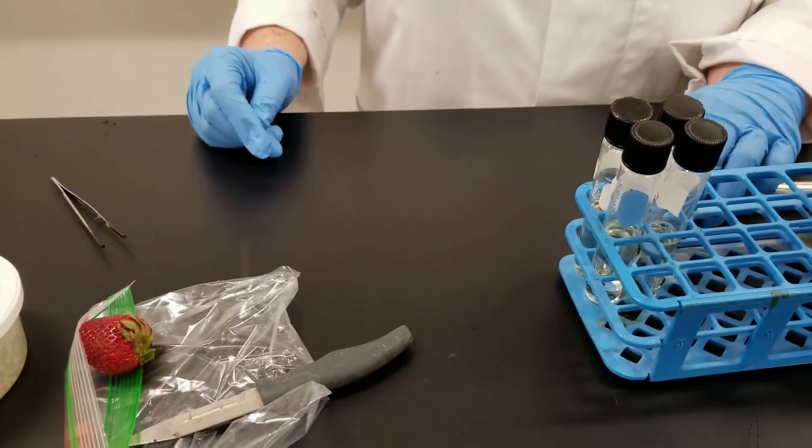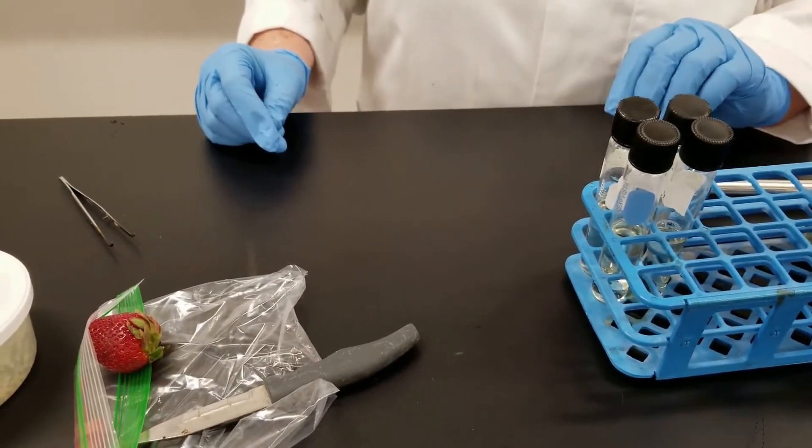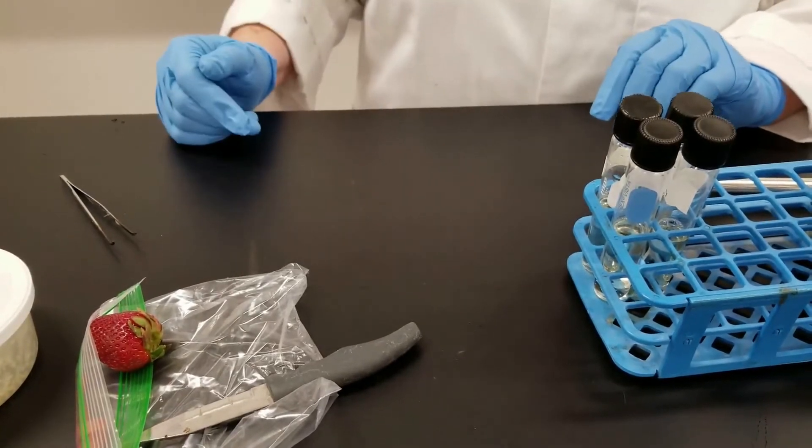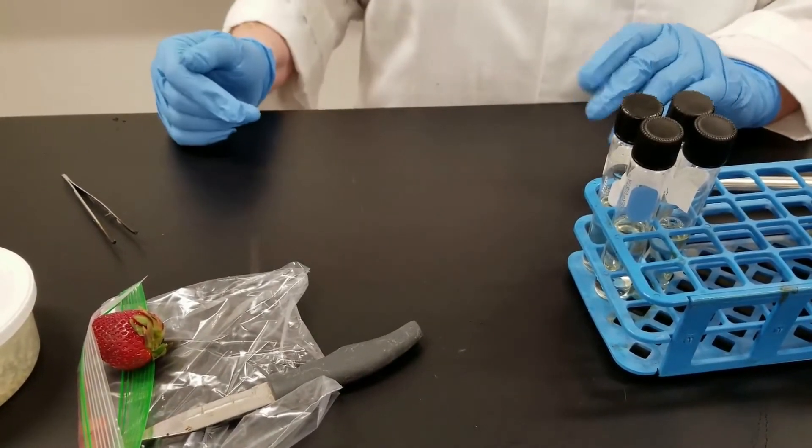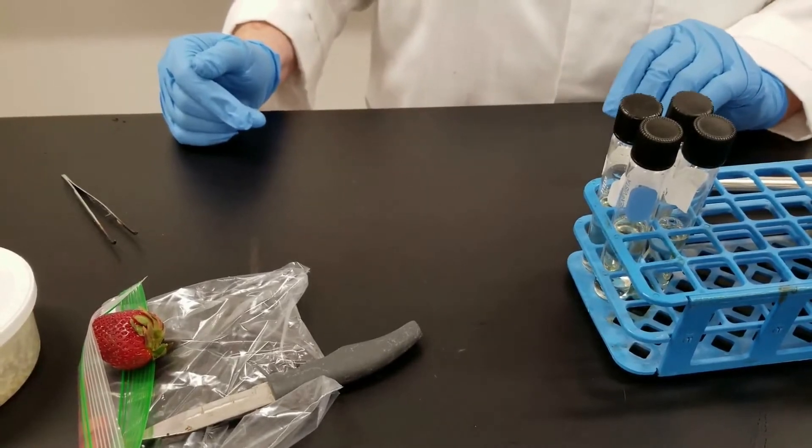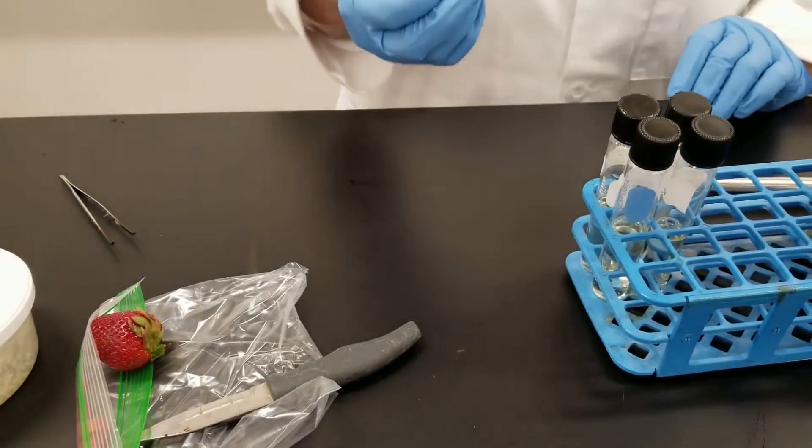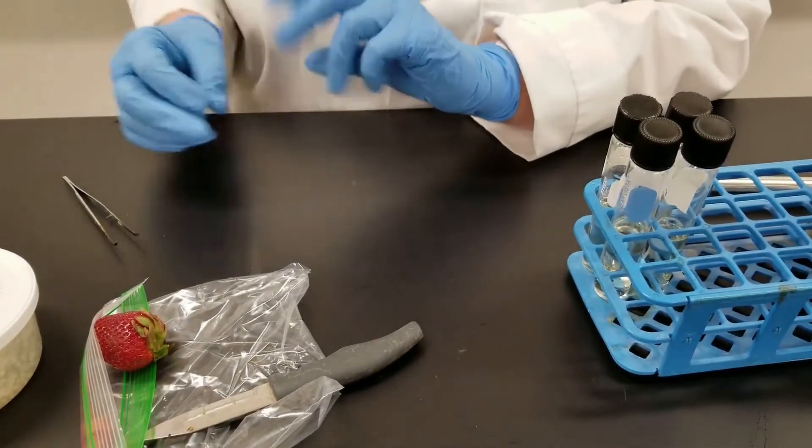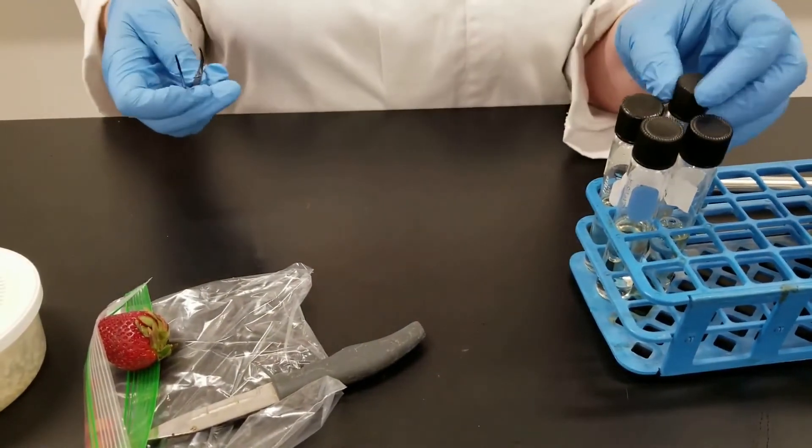Fungi in a broth medium are going to look different than bacteria. Bacteria, you know how when it's growing in a broth it turns very turbid or cloudy. Fungi don't do that. They tend to form little balls. But the liquid portion remains clear. And so that's just another difference between them.